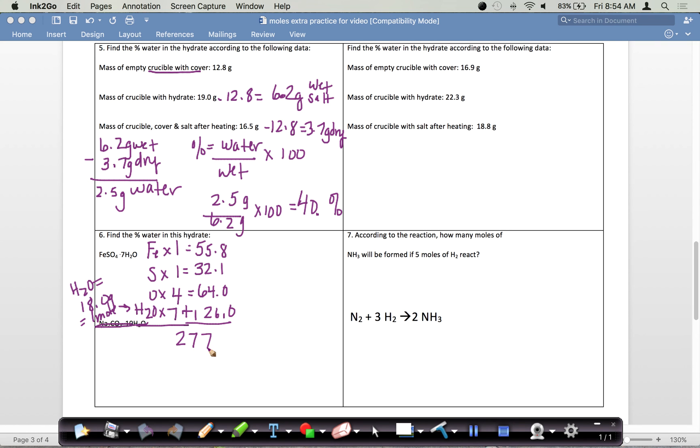We add these together, and the gram formula mass for this hydrate is 277.9 grams equals 1 mole. For percent of water, we do the part for the water, which was 126.0, over the total, which was 277.9, times 100, and we get 45.34. Don't forget to put your percent sign after it.